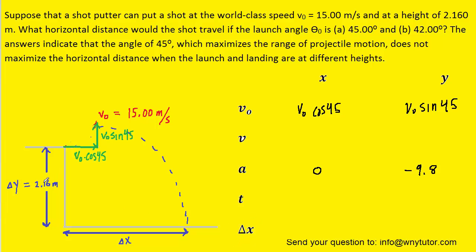The displacement in the y direction is given as 2.16 meters. We have to make sure to call that negative 2.16 meters, because overall the shot is moving downward in the y direction. So it's a good idea to call that negative 2.16.